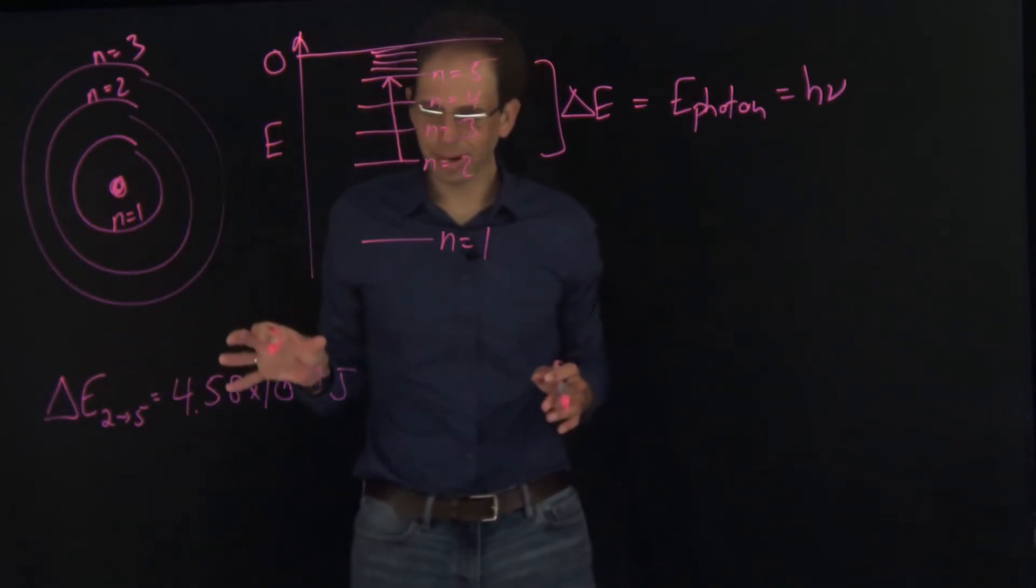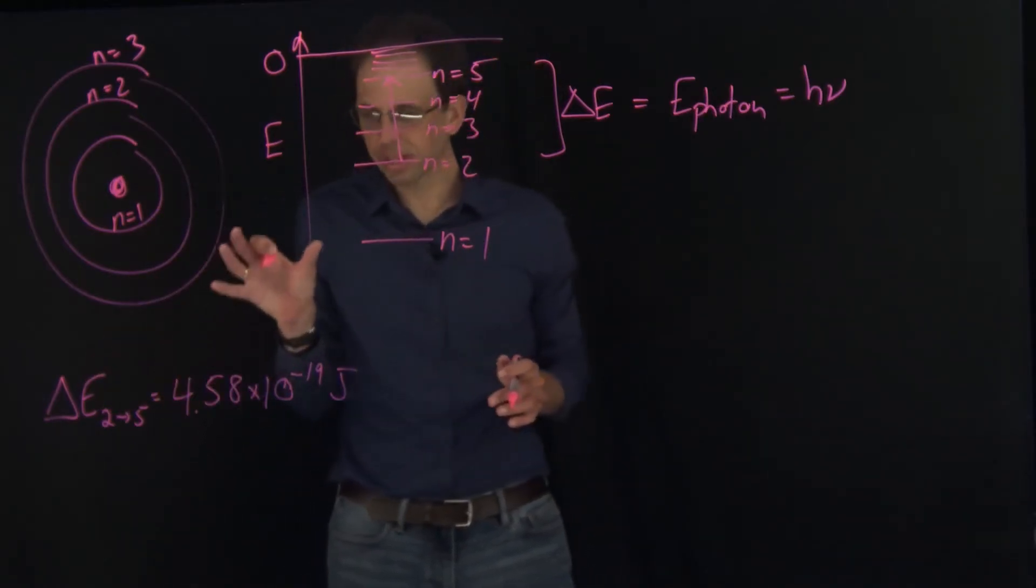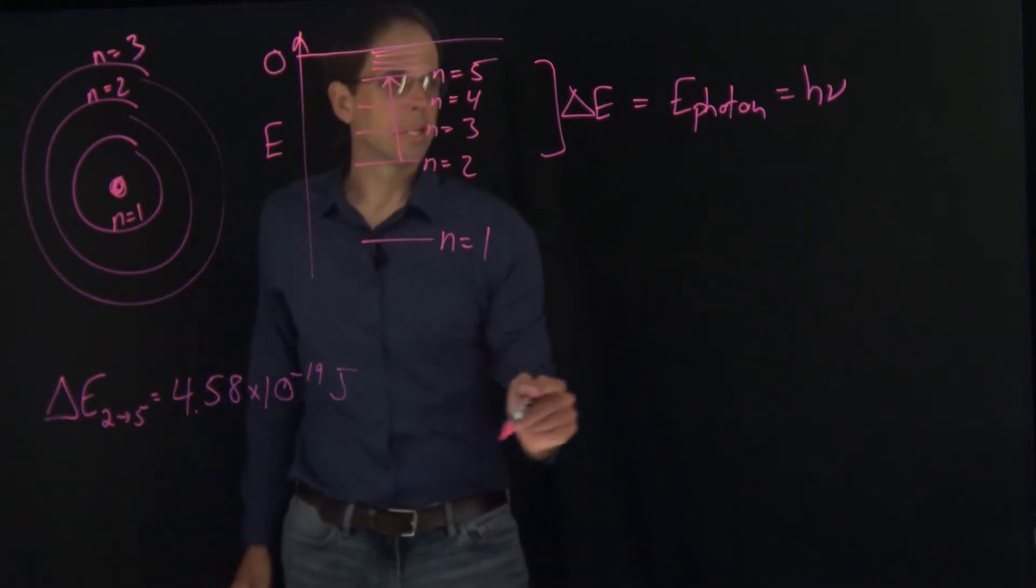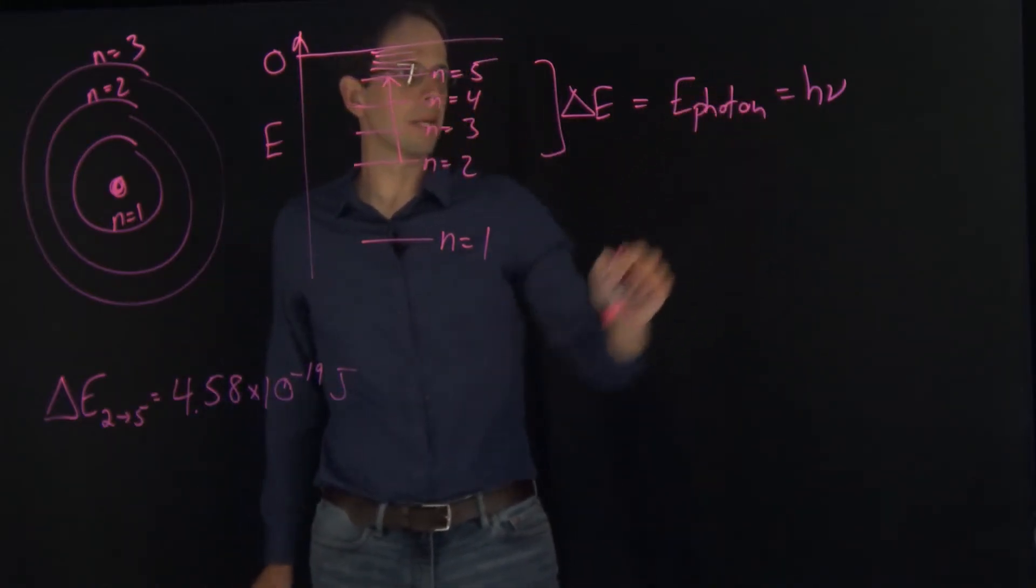Now let's calculate the wavelength of light associated with this. So we know that E photon is equal to H nu, or if I want it in terms of wavelength, it's going to be H C over lambda.